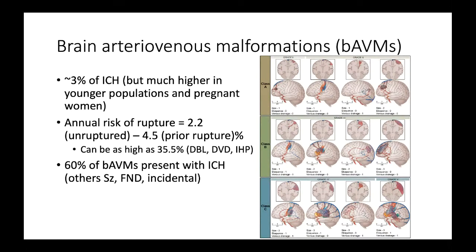Another common secondary ICH cause, probably second most common behind hemorrhagic tumors, is brain arteriovenous malformations or AVMs, comprising about 3% of all ICH. But in younger patients aged 20 to 40, this is by far the most common cause. In pregnant women who present with ICH, you want to put AVM much higher in your differential. We classify AVMs using the Spetzler-Martin grading system, grading them based on size, eloquent brain location, and whether venous drainage is deep.